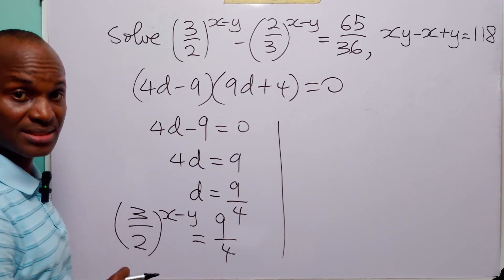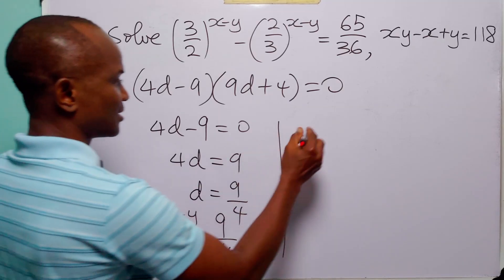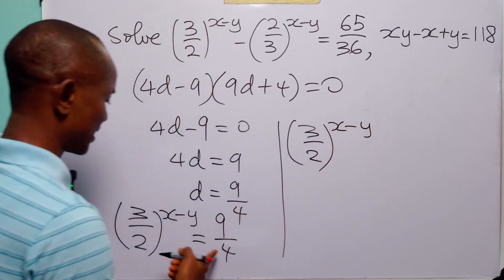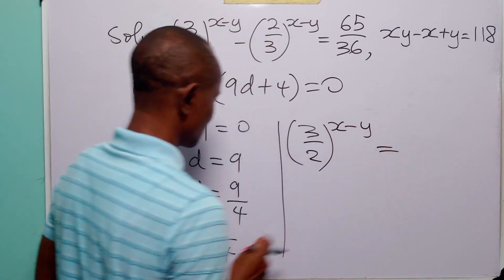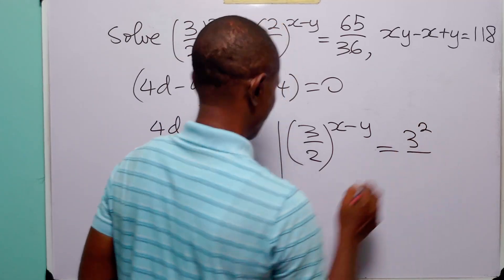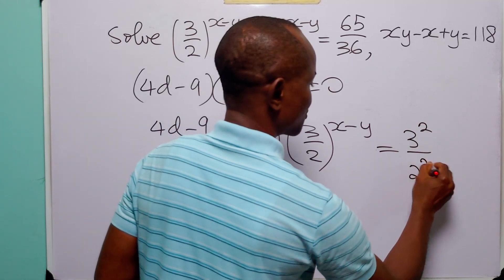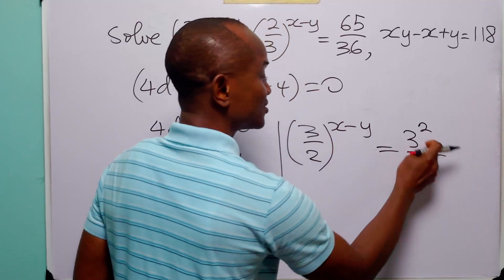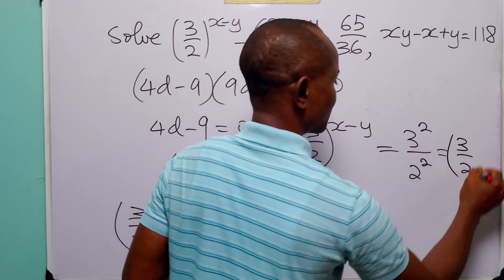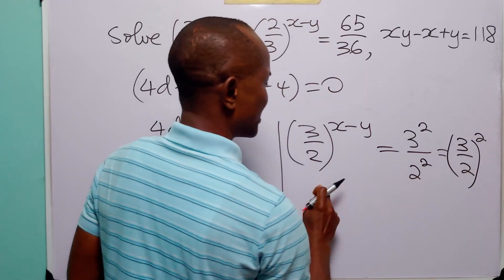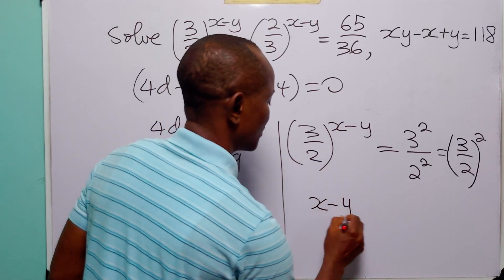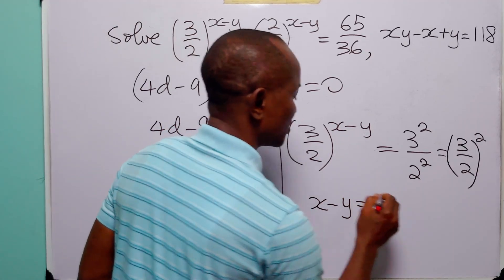Now let us take a look at the remaining equation. This equation can be written as 3 over 2 to the power x minus y equals 9 over 4. We remember that 9 is 3 squared and 4 is 2 squared, so since these two numbers have the same exponents we can combine them. Comparing both sides of this equation, we see that x minus y is equal to 2.